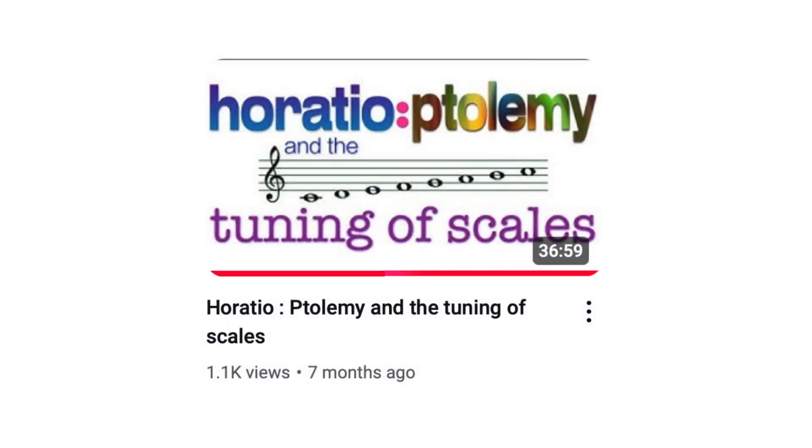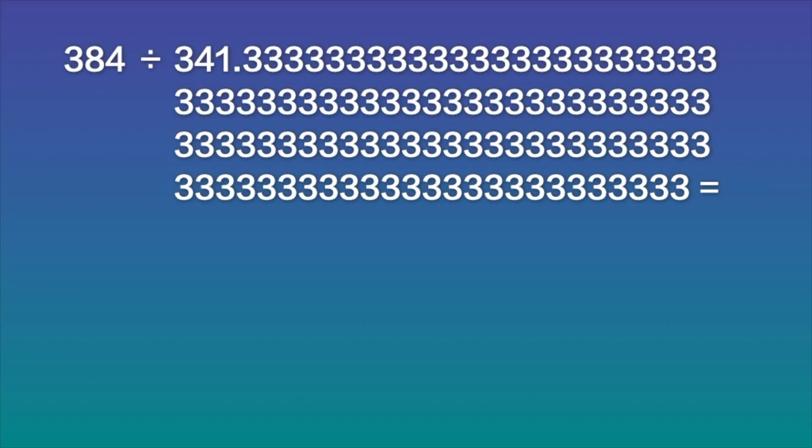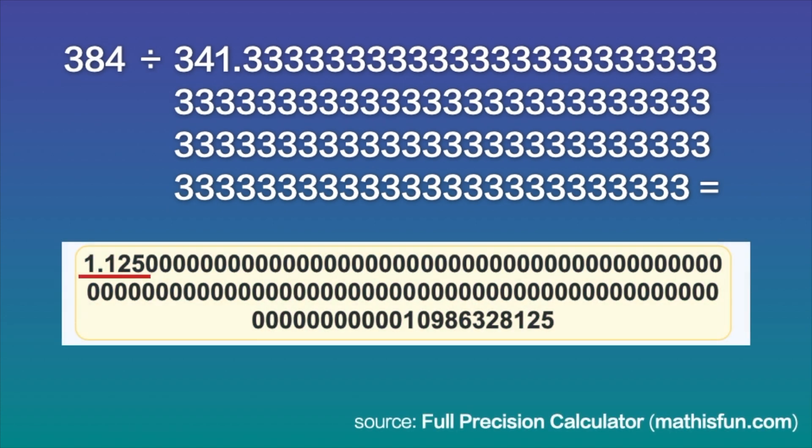4 and 5 also show up in the strange number I discussed in this earlier video. I found the strange number when dividing for the ratio between the fifth and the fourth, between G and F, when G's value is 384 and F's value is generated using Plato's harmonic mean of 341.33 repeating. So if we divide G at 384 by F at 341 with 100 threes after the decimal point, we end up with a number incredibly close to the 9 to 8 ratio of 1.125. But it's 1.125 with 99 zeros after it, and then a strange number tacked on the end.